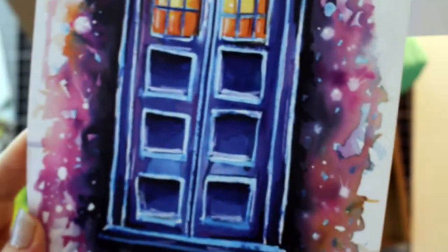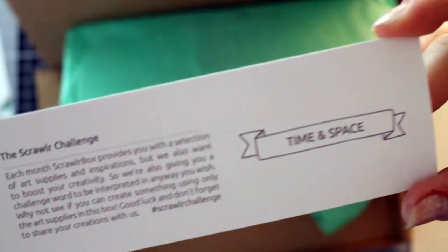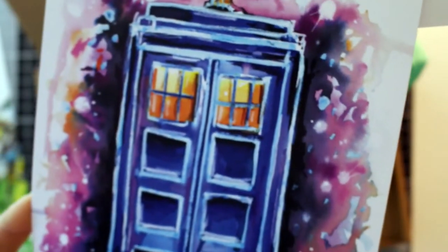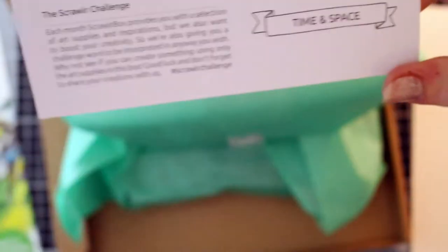Although, if there's already a TARDIS picture, what on earth am I going to draw? Whenever I think time and space, I think TARDIS. But there's already one here. Can I draw a TARDIS and get away with it? I guess I could draw one different to that. Anyway, let's have a look through the rest of the supplies.